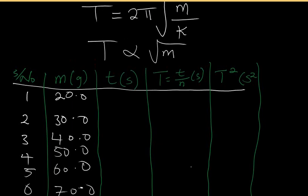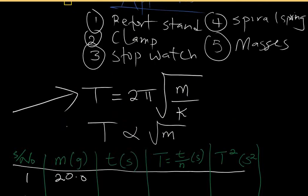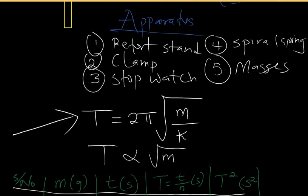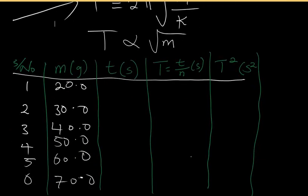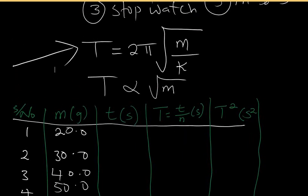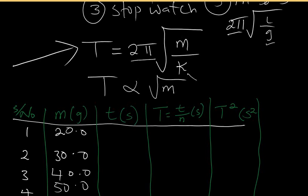How do we take our readings theoretically? There is a slight difference from what we did for the simple pendulum. For the simple pendulum, T = 2π√(l/g) — two pi and g are constants with known values. But for the spiral spring, T = 2π√(m/k), and k depends on the spring, unlike g which is the acceleration due to gravity and is constant everywhere on Earth.